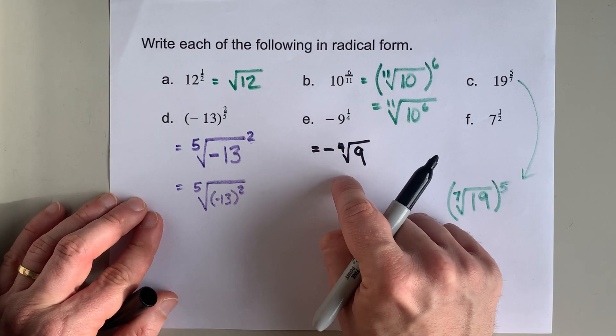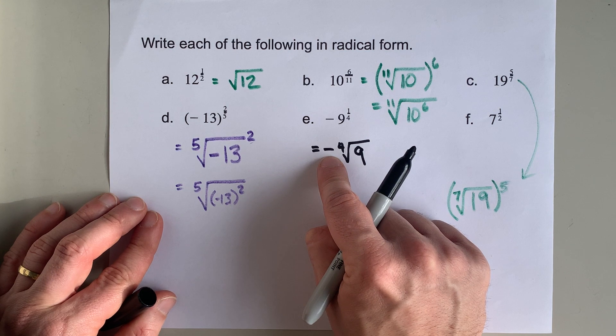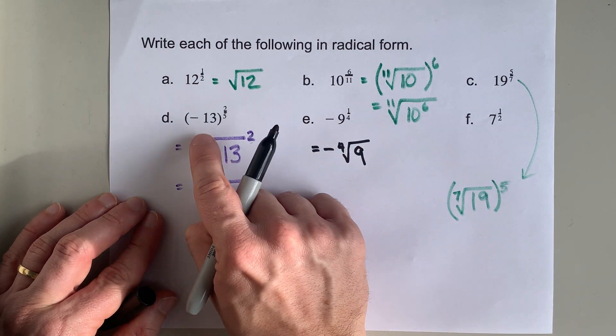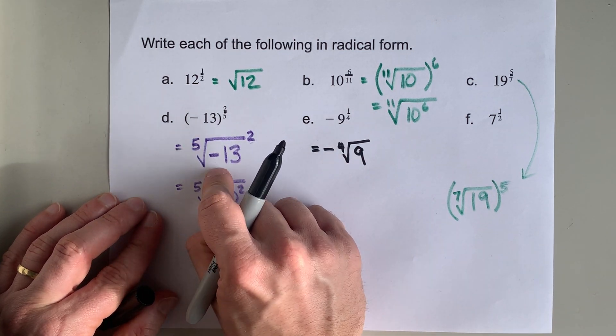So this is my answer here. Note that the negative is out front, because it was not grouped with the 9, the same way this negative was grouped with the 13.